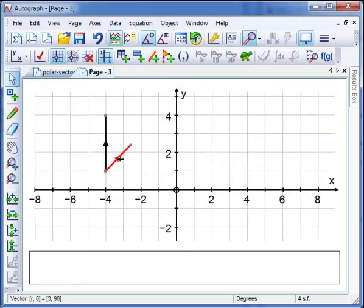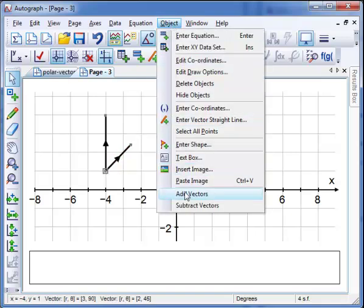Now if I select these two and also select this point, I can right click and add the two together.